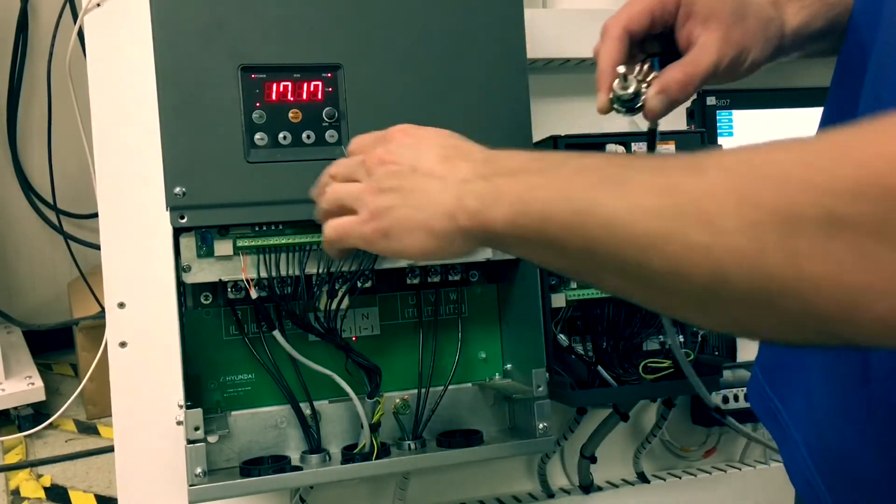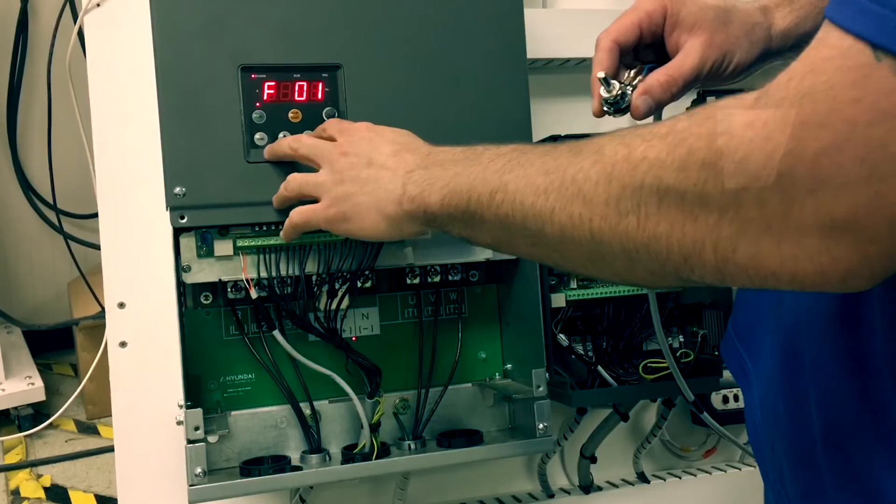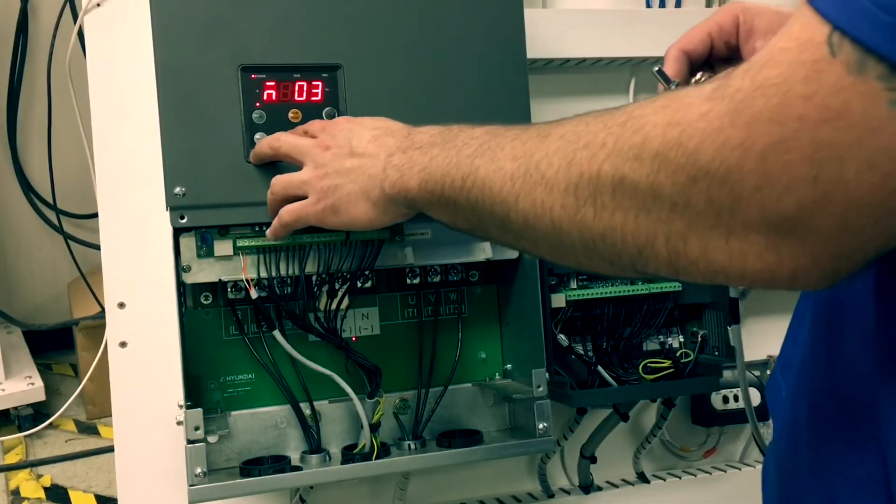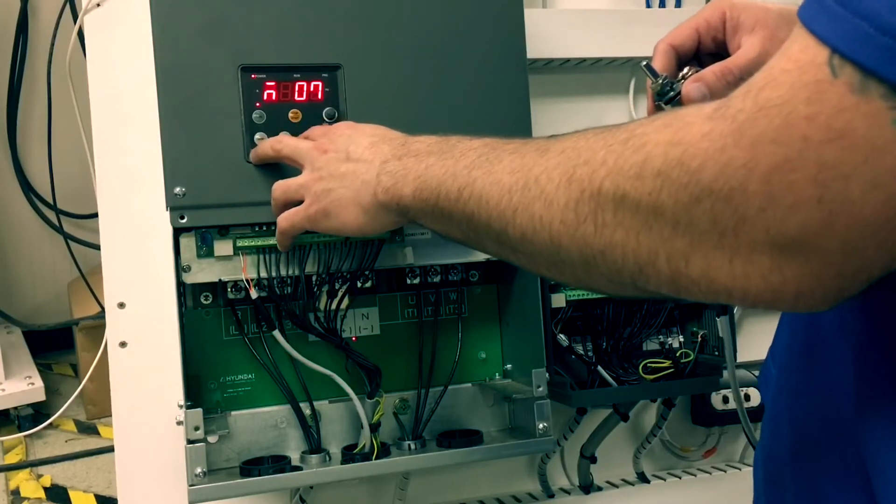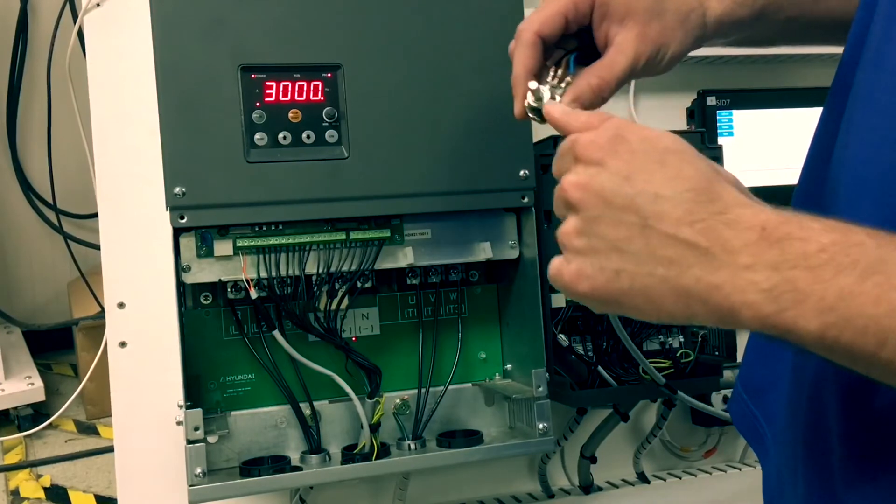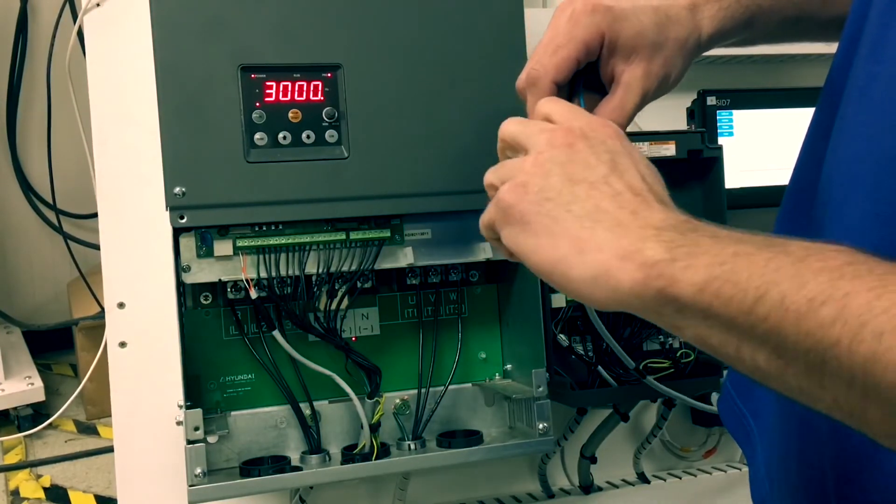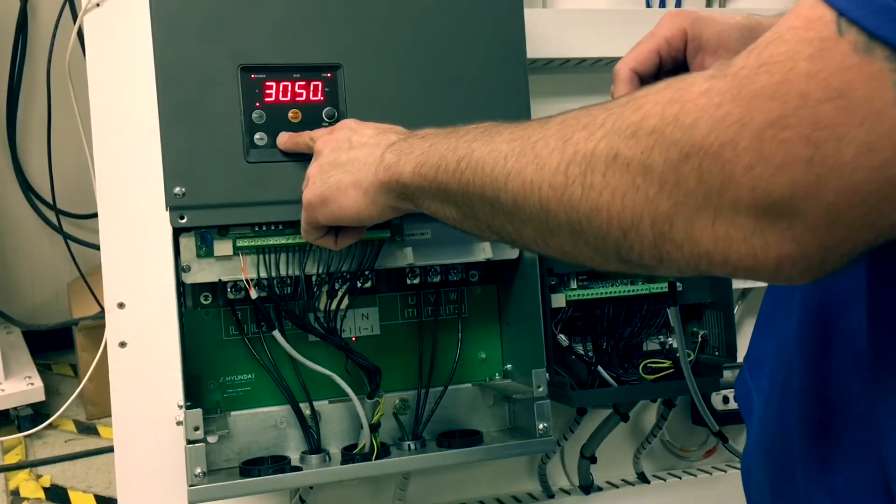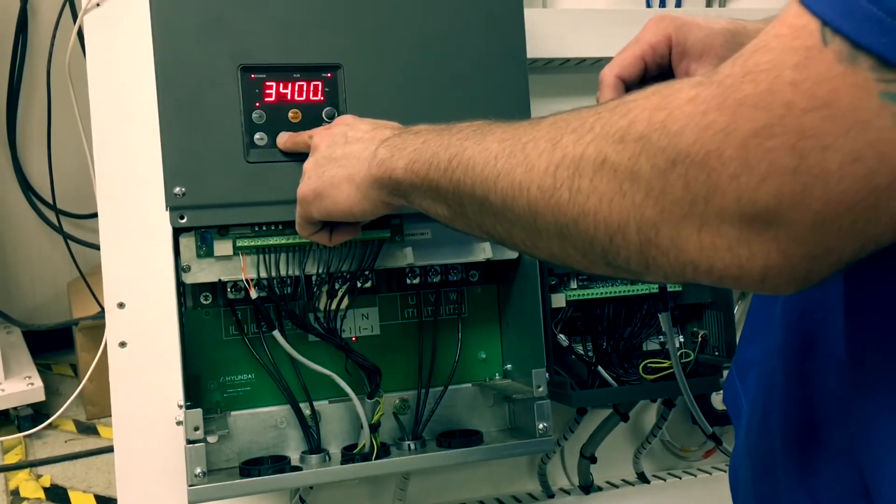First thing we will need to do is go into our M parameters and begin our process of calibration by accessing M07, making sure our speed potentiometer is turned all the way down at 0 volts. Then raise the M07 value to the highest value to 3000 without a dot, then store.